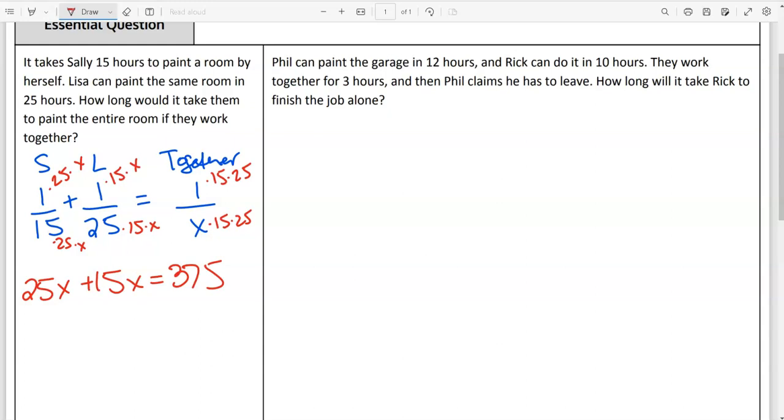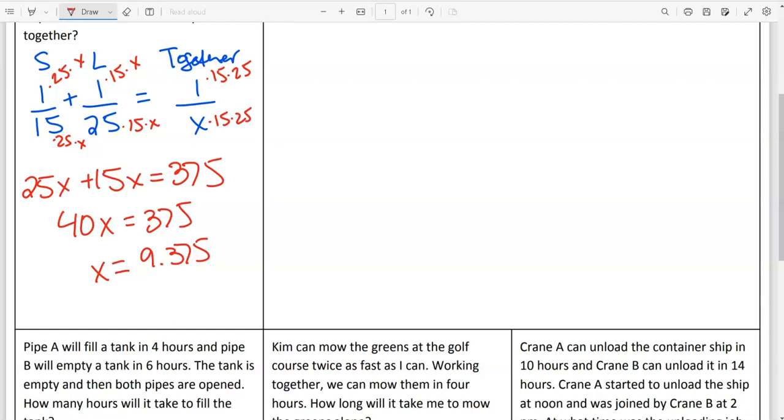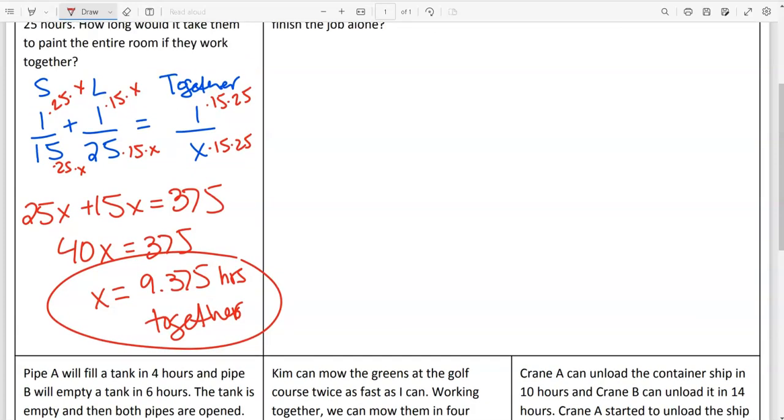Because then if I do that, now all three rational pieces have a 15, a 25, and an x in their denominator. 15 times 25 is 375. And from here, we're just going to add and then divide. Add these together to get 40x equals 375. Then we're going to divide by 40. I get 9.375. So it's going to take about 9.375 hours if they work together.